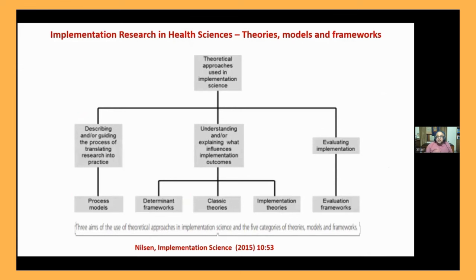This is a framework for the theoretical approach in implementation science, with five categories: theories, models, or frameworks. These include process models for translating research into practice, and determinant frameworks for understanding and explaining what influences implementation outcomes. You can use a combination of all of these, or singly one or two. The referenced article on this is from the last decade.